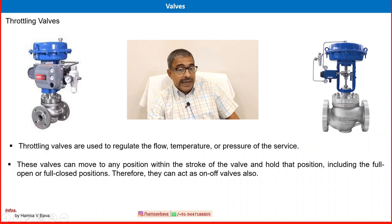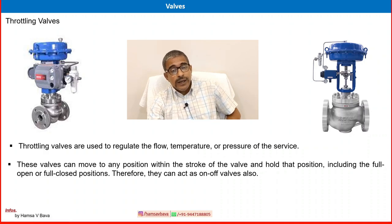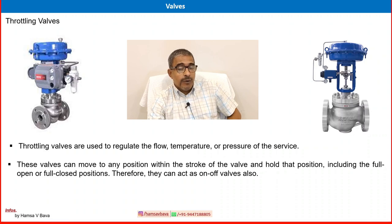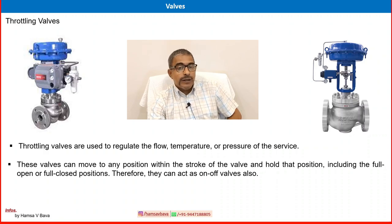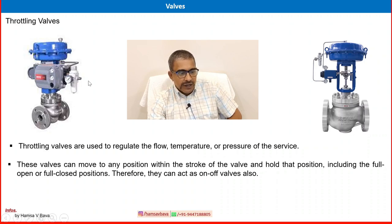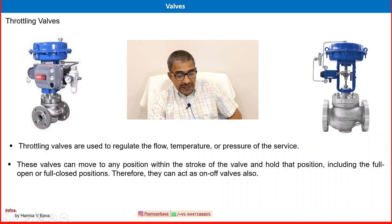Acting as an on-off valve is not the throttling valve's primary function. It normally works anywhere above 0 and below 100 percent open. Its core function is maintaining the flow of fluid to control pressure, temperature, flow, or level. That is why an actuator is present — in this case, a pneumatic actuator. A positioner and pressure regulator are also there, along with an I2P converter. Many items are visible here: the positioner, opening and closing element, and pneumatic actuator system for operating the valve.